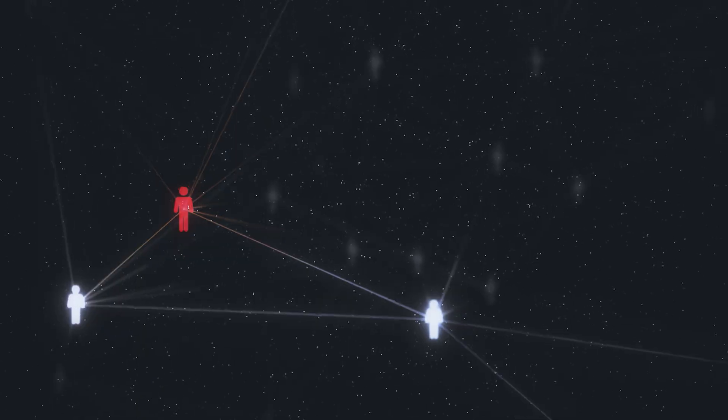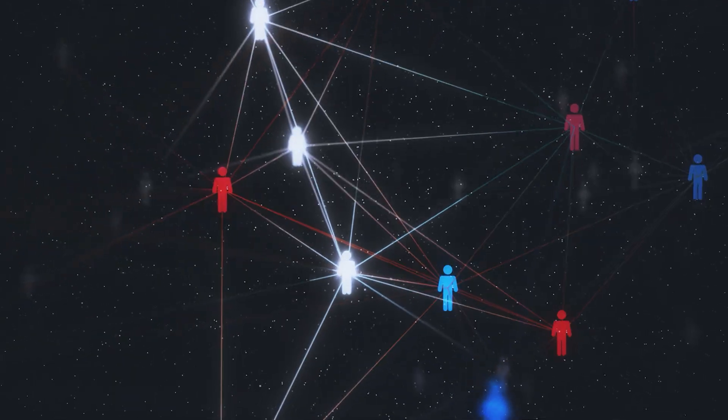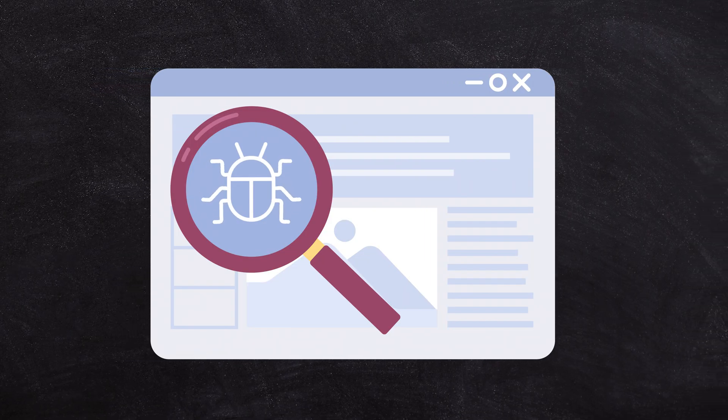So when an issue comes up like this — someone says Google ate my files or doubled up my files — we try to investigate what the user might have done, or what another action might have done that caused the issue. It's very, very unlikely that a piece of software like Google Workspace, deployed to literally billions of people, is just going to break. Now there are bugs, and there are certainly times where something has gone wrong in the Google ecosystem.